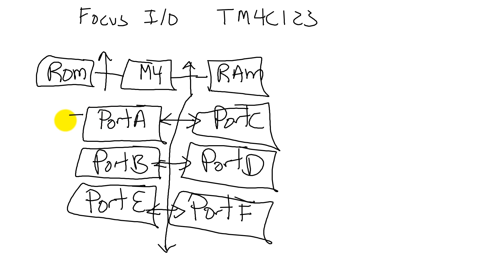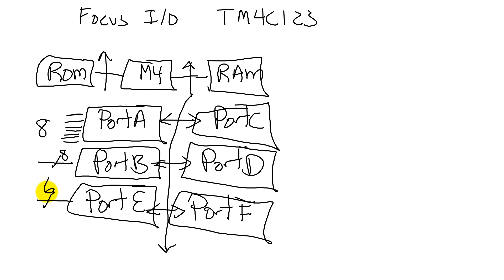Each of these ports have pins. Port A has 8 pins, port B has 8. Port E has 6, port F has 5, port D has 8, and port C is special — we're going to have access to 4 of its pins.